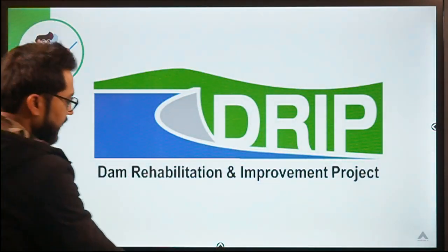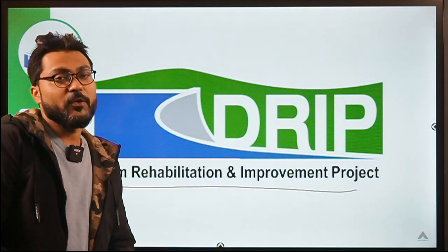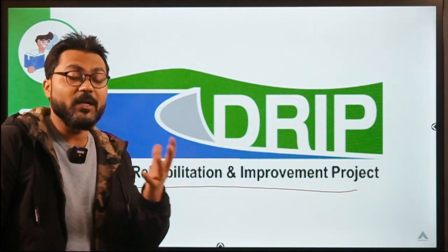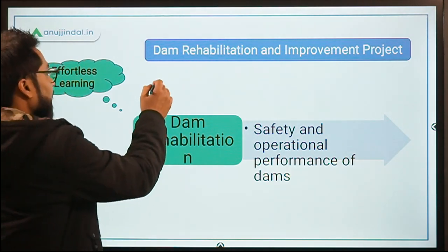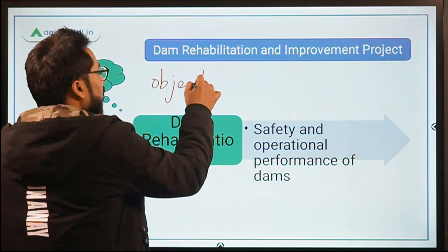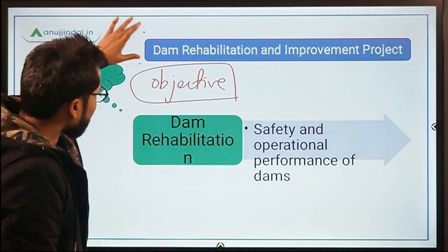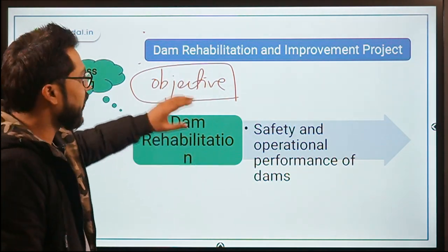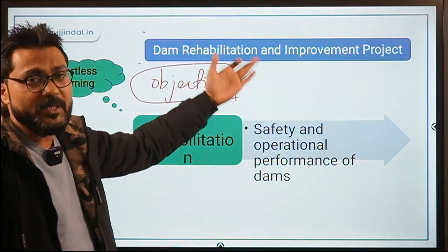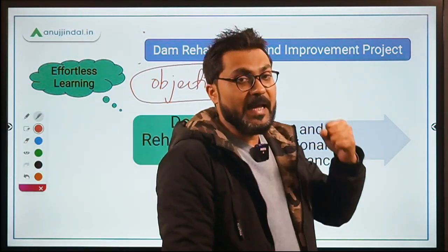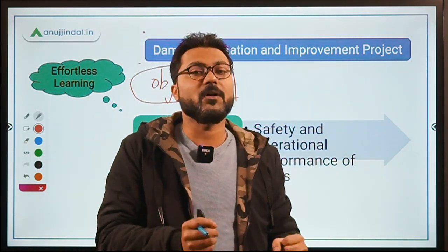You should remember the full form because the full form will help you in determining the objective of this project. Dam Rehabilitation and Improvement Project — so let us determine the objective of the scheme. There should be no difficulty in determining the objective because the name says it all: we are talking about the rehabilitation of dams and their improvement.